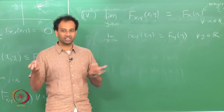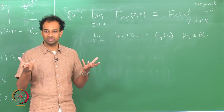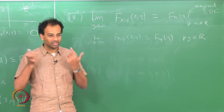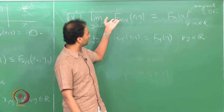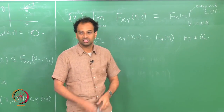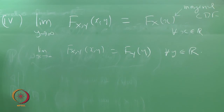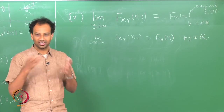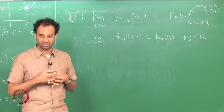Given the joint CDF, I can determine the marginal CDF — the separate CDFs of X and Y — but the opposite is not true. Given the two marginal CDFs separately, there is no way to figure out the joint CDF. You can show this by counterexample: construct two different joint CDFs with the same marginals, and you have proved it. The marginal only captures the statistical behavior of that one random variable, whereas the joint CDF captures the interdependence structure between X and Y.